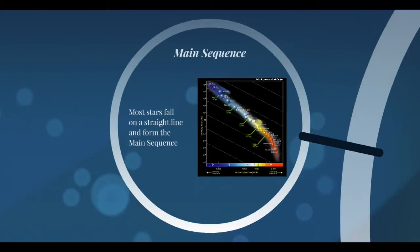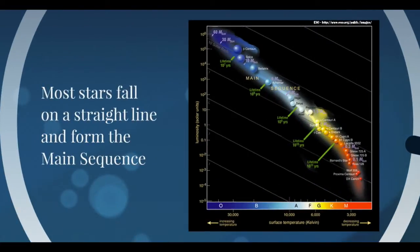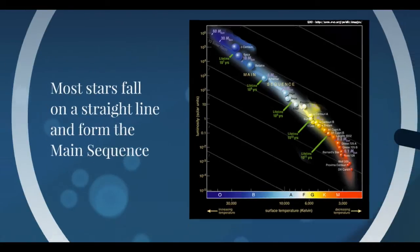If I take a lot of stars and look at them, they will fall along a line, and this line is called the main sequence. Looking at this HR diagram, the red stars fall on one end and the blue stars fall on another. These stars fall on a straight line which we call the main sequence. Main sequence stars are stars that are fusing hydrogen in their core and producing helium.